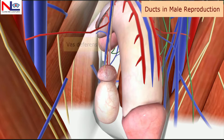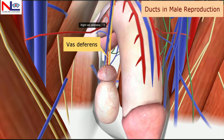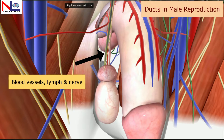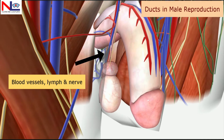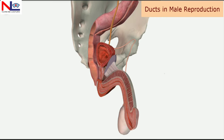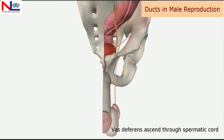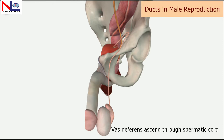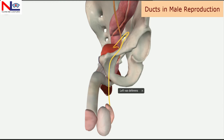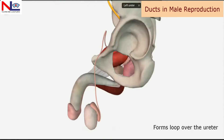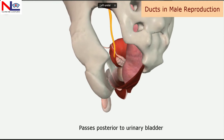The spermatic cord consists of the cremaster muscle, which surrounds the testes; the vas deferens, which is continuous with the epididymis; the blood vessels — both artery and veins; the lymphatics; and the nerve supply. In this animation you can see the vas deferens ascending through the spermatic cord, forming a loop over the ureter and passing posterior to the urinary bladder.